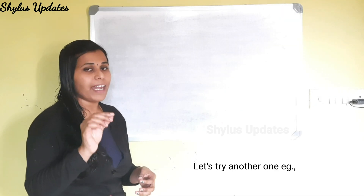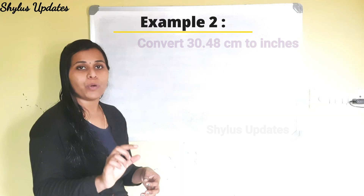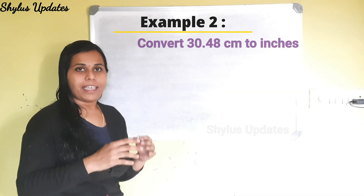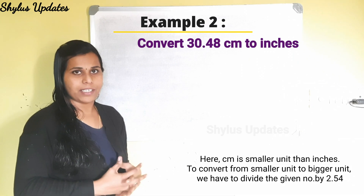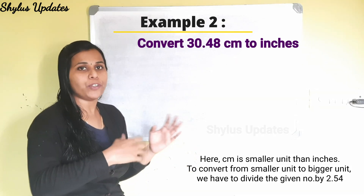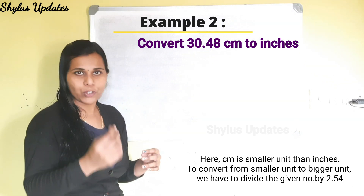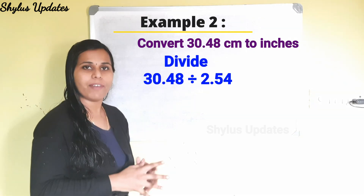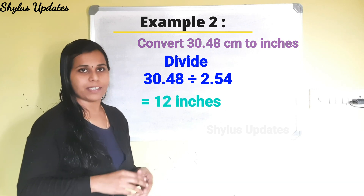Let's try another example. Convert 30.48 centimeter to inches. Centimeter is the smaller unit when compared to inches. Therefore, we divide the given number by 2.54: 30.48 ÷ 2.54 = 12 inches.